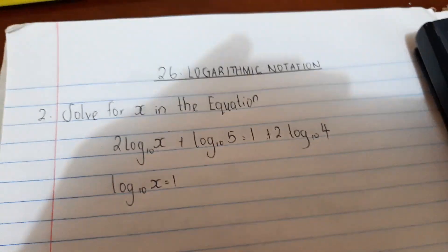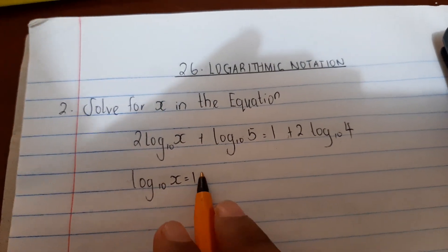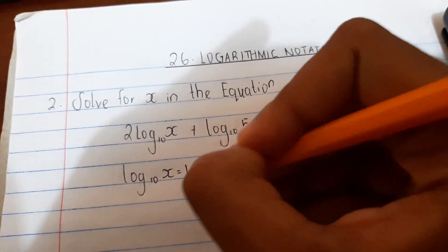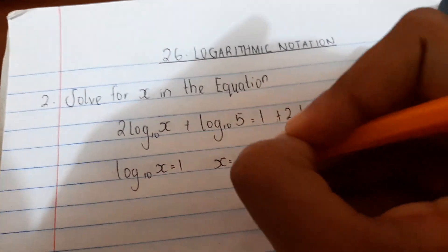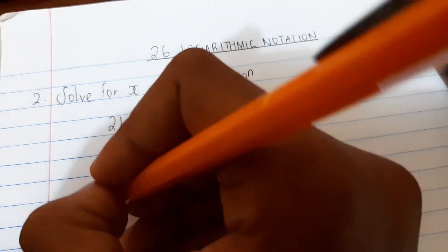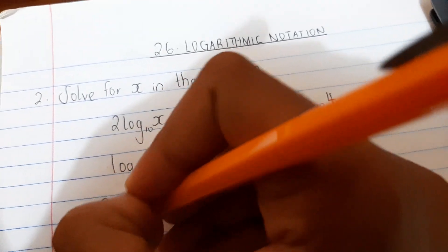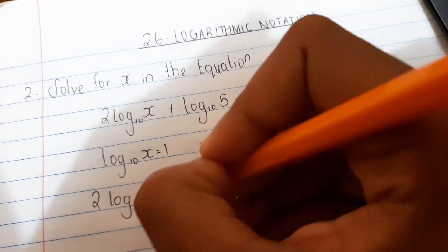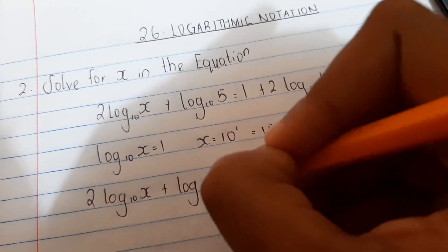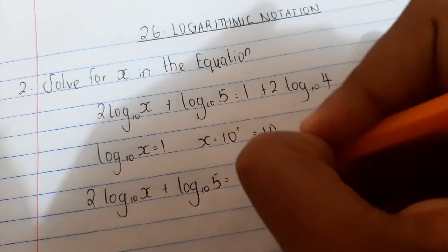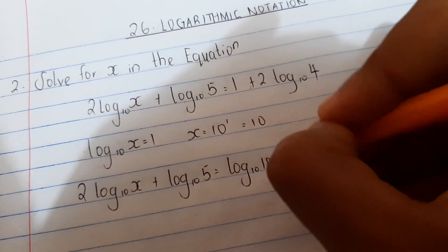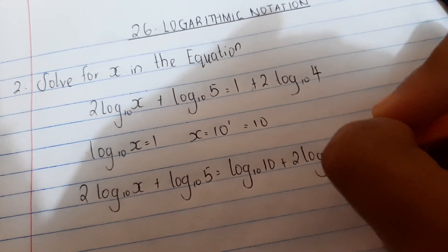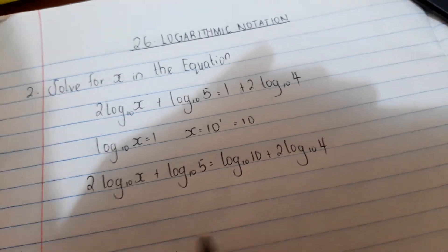To find x, we say 10 to power 1 equals x, so x equals 10 to power 1 which is 10. Now, 2 log base 10 x plus log base 10 5 equals log base 10 10 plus 2 log base 10 4.